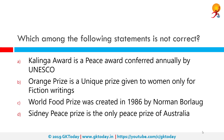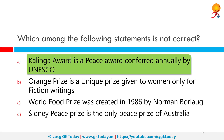Which among the following statements is not correct? Among the given options, the incorrect option is A, which states the Kalinga Award is a peace award conferred annually by UNESCO. As a matter of fact, the Kalinga Prize is for the popularization of science — it is an award given by UNESCO for exceptional skill in presenting scientific ideas to lay people. It was created in 1952 following a donation from Biju Patnaik, founder and president of the Kalinga Foundation Trust in India.